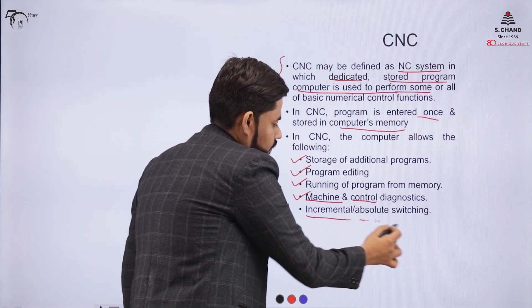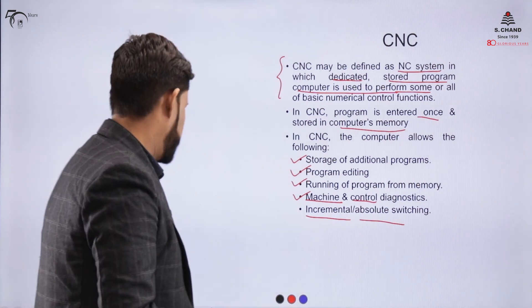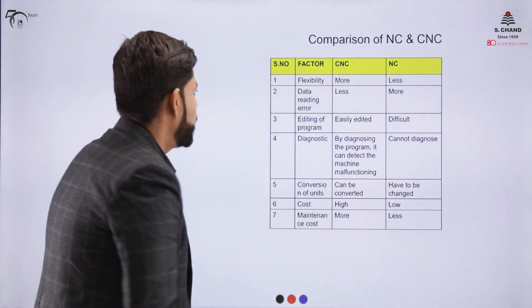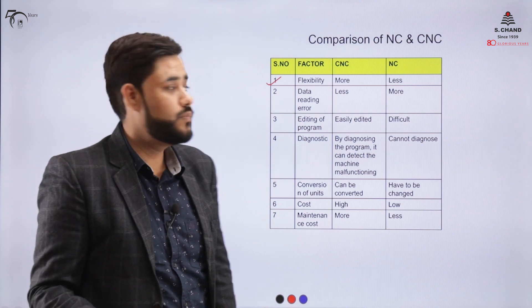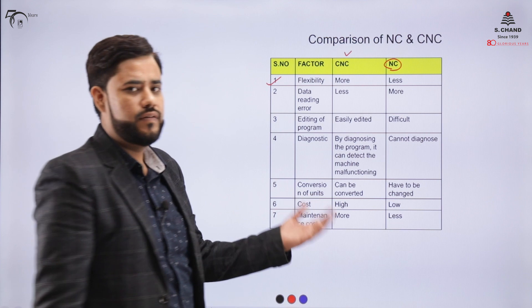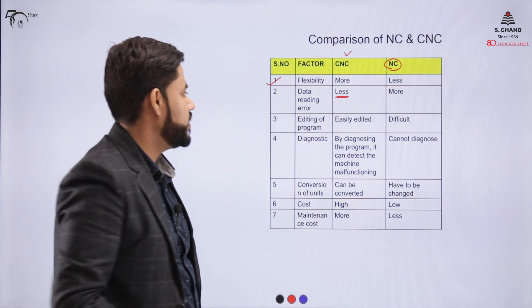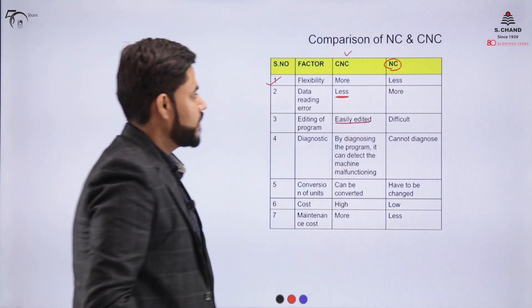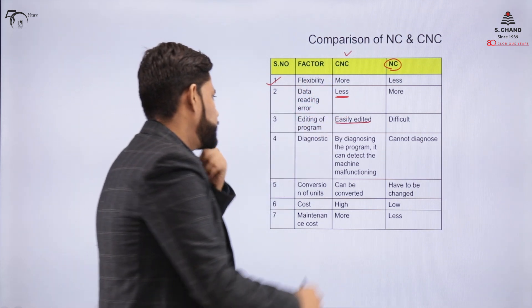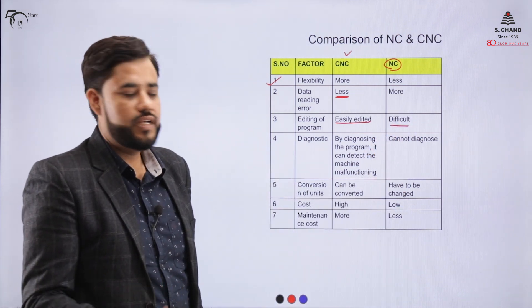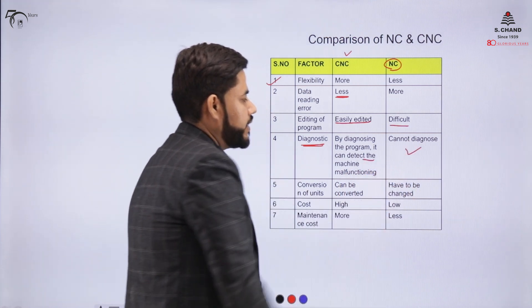Comparing NC and CNC systems: in terms of flexibility — such as switching between incremental and absolute programming — CNC is more flexible as it is an advancement over NC. Data reading errors are lesser in CNC but more in NC. Editing of the program is easy in CNC since it is done directly in the computer, whereas in NC the punch tapes make program changes very difficult.